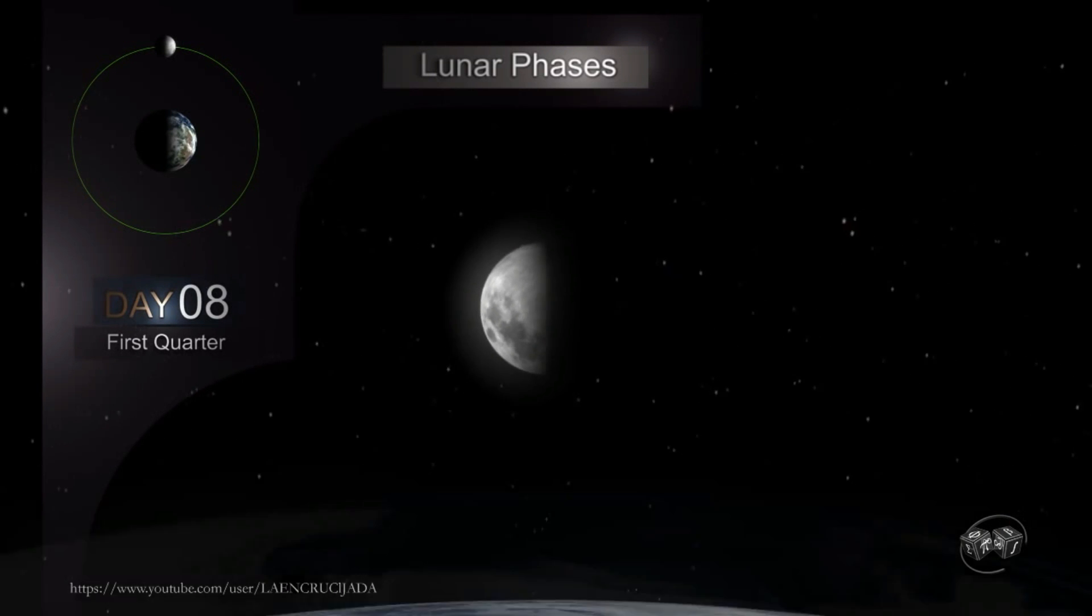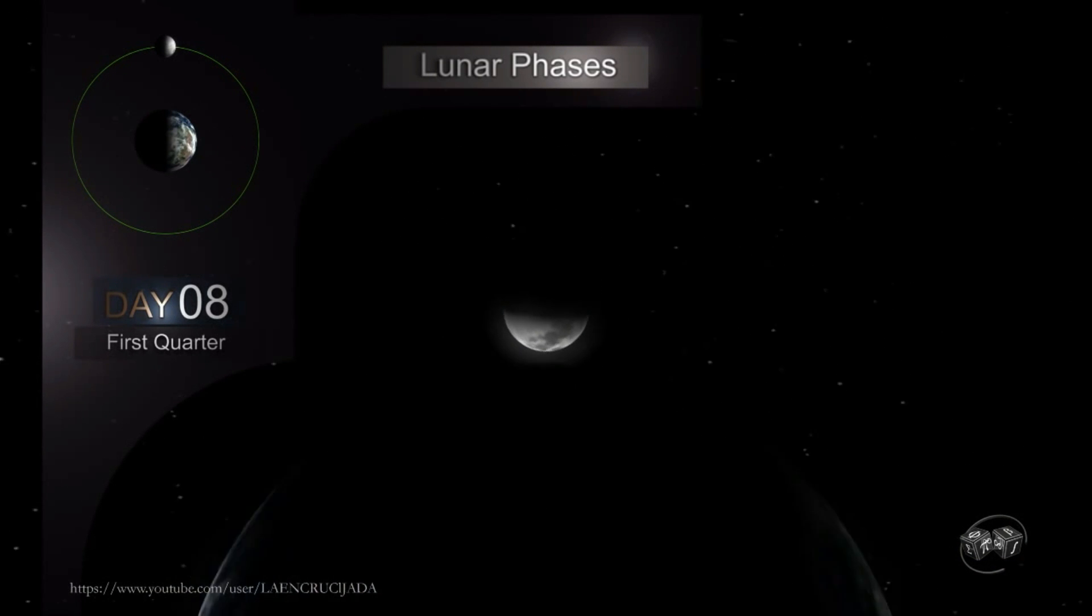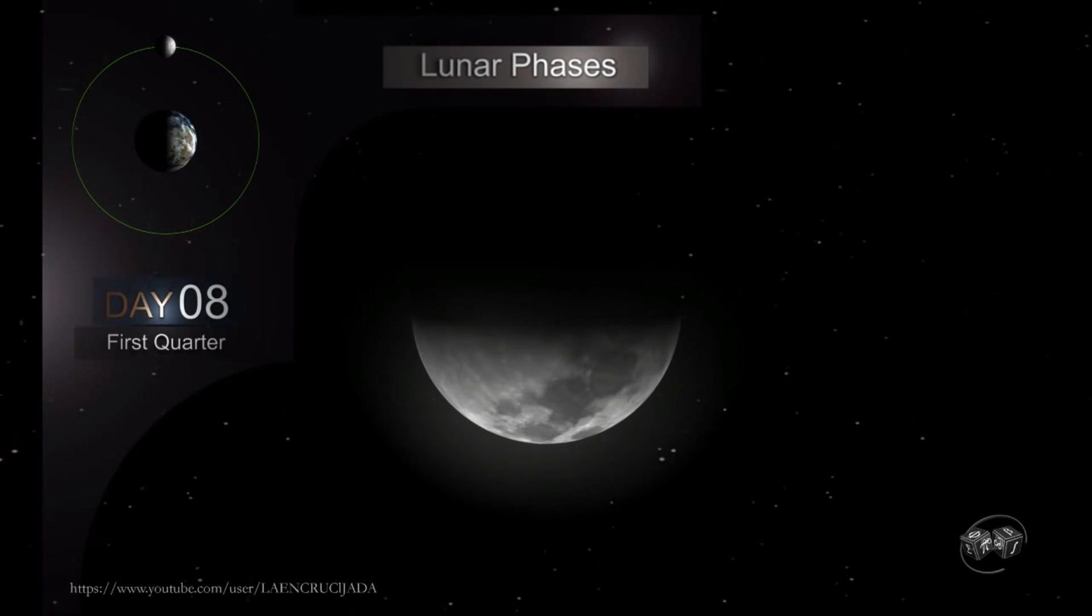If at that moment one views it from the line of Ecuador at night, the Moon will appear to us in the form of U.